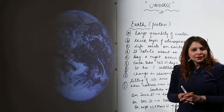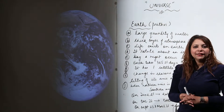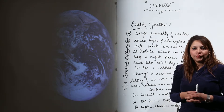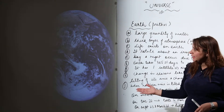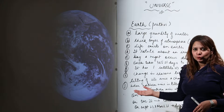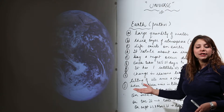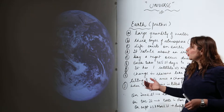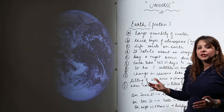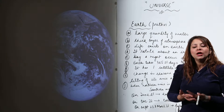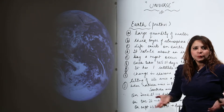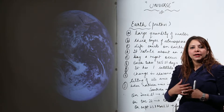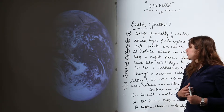Now we are going to start with the detailed study of the planet on which we live, that is the Earth, also called Prithvi. As you can see, this is how our Earth looks. It is actually the third planet in sequence from the sun. You know much about the earth because you live and experience things here, but I am going to explain it in a short manner.